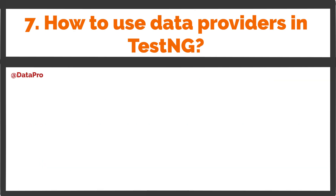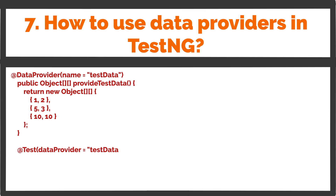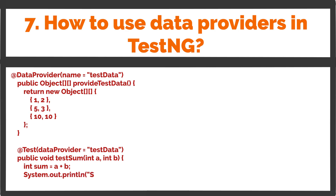@DataProvider(name = "testData") public Object[][] provideTestData() { return new Object[][]{{1, 2, 5}, {3, 10, 10}}; } @Test(dataProvider = "testData") public void testSum(int a, int b, int sum) { int sum = a + b; System.out.println("Sum of " + a + " and " + b + " is " + sum); }